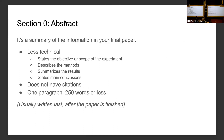Section zero is the abstract. It is basically the summary of your whole project and is generally written at the end because by then you clearly know what is happening. It should not be more than 250 words, it is a single paragraph, it does not have any citations — it is just a summarization of your entire research.